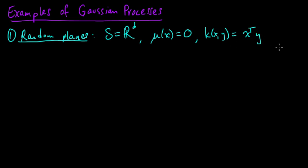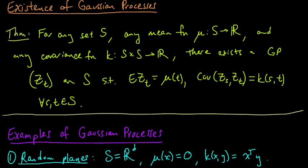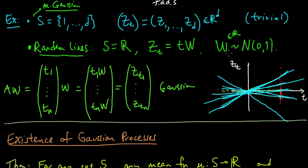And the covariance function is x transpose y. So when D is 1, this just reduces to x times y. And you can check that, in fact, that simple example of random lines has that mean and covariance function.